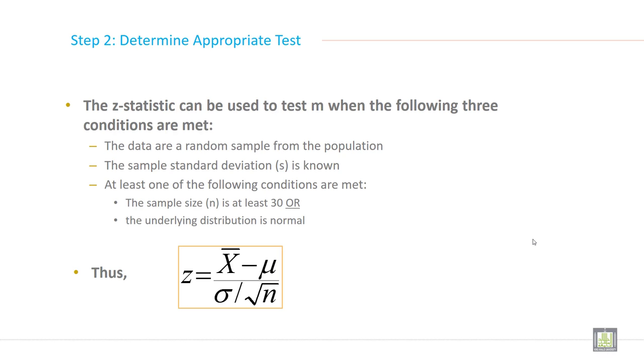So here the second step is determine appropriate test. When you finalized your first step, when you have written your null and alternate hypothesis, then start to determine appropriate test - which test you are going to apply.